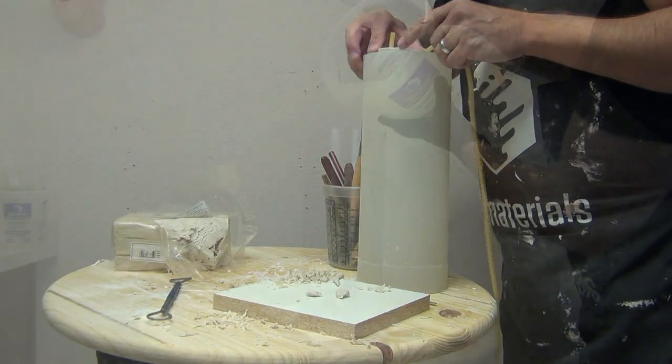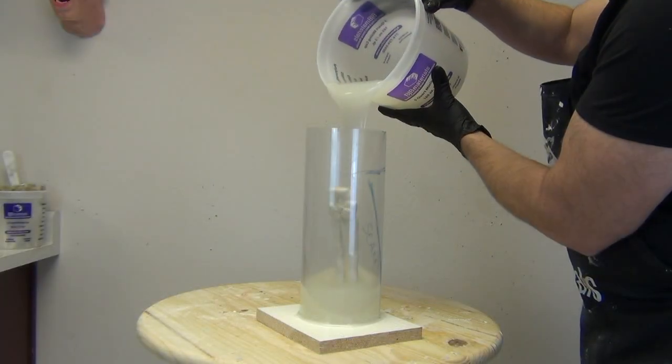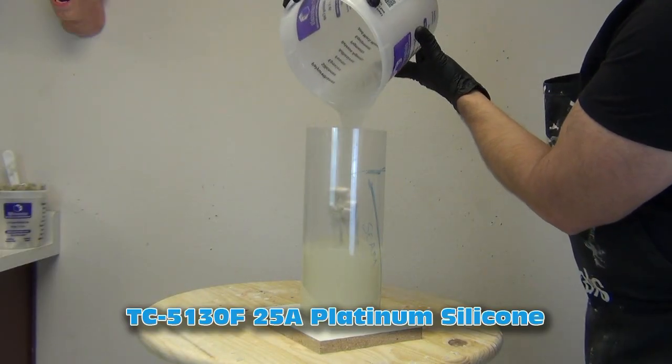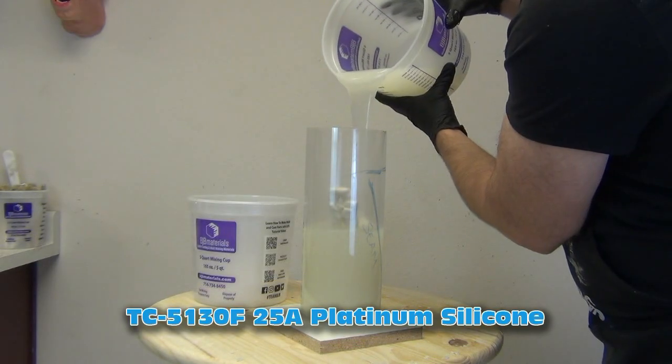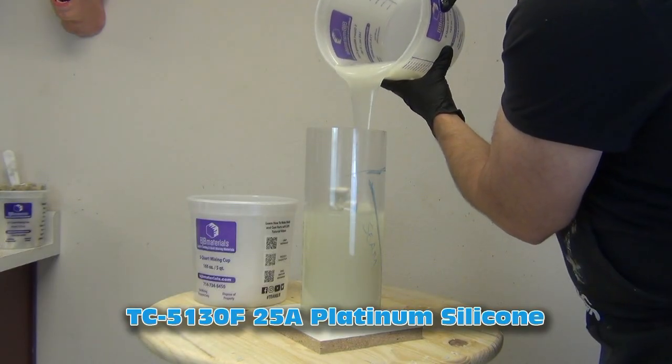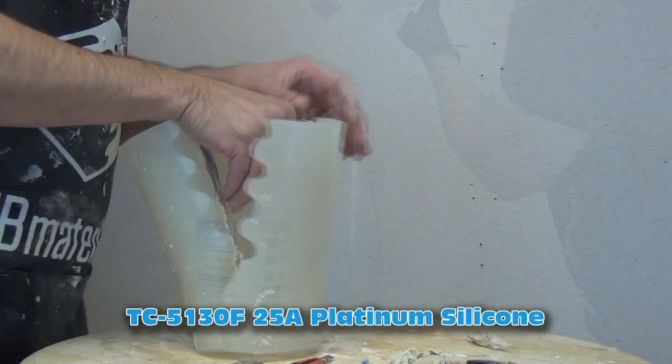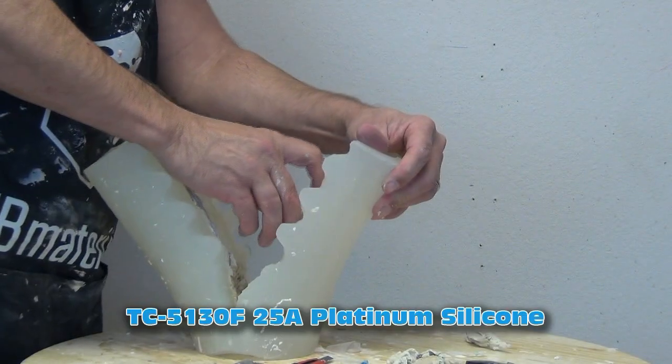Then I molded that core. Once I sculpted that and got it exactly the way I wanted it so it could incorporate that surgical tubing vein, I made a mold of that using TC5130F. That's the fast-setting, a little bit firmer silicone. That one's a 25 Shore A. Then I demolded that.